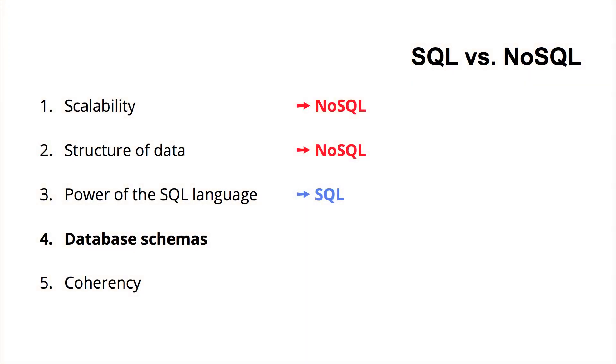That is where database schemas come in with SQL databases. When I want to add a new field, I do one command — ALTER TABLE — and I have a new column in my table. If you want to do this in a NoSQL database, it's slightly more complicated. If you want to modify your existing data in NoSQL databases, you have to iterate over all the existing records, adding new fields, removing existing fields, to get what you would do with a single SQL command.